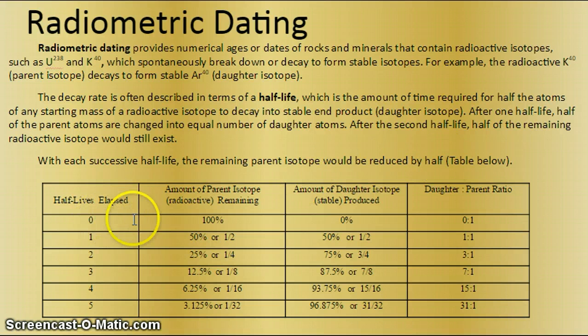So check out the table below. To begin this, if we're at zero half-lives, we are saying that we have 100% of radioactive parent isotope. And therefore, if you have 100% of a sample, you have 0% of stable daughter, and this is a ratio of 0 daughter to 1 parent.